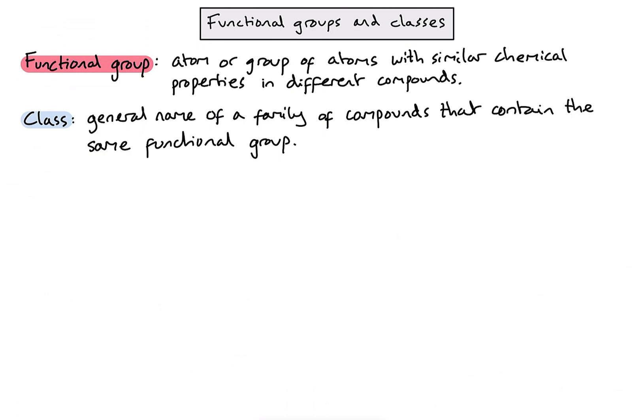Another thing you're going to see in some of the formulas we draw is the letter R. The R simply stands for the rest of the molecule — it just saves drawing the whole of a complicated molecule and allows us to focus on individual functional groups. What we're going to try and do is have a look at some formulas of the different functional groups, name them, and also name the class to which they belong.